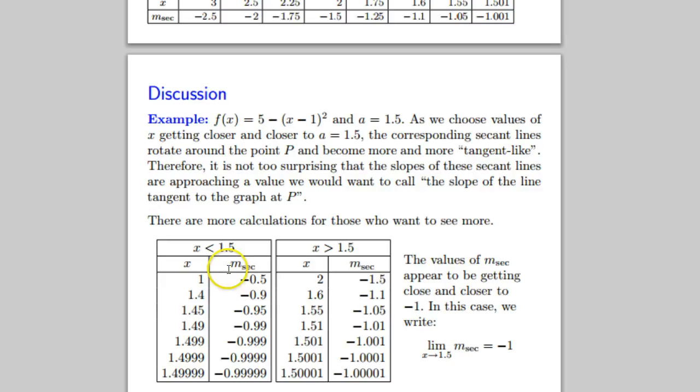Here's some more calculations if you really wanted to see. The value of m secant, the slope of the secant, appears to be getting closer and closer to negative 1. In this case, we would write the limit as x approaches 1.5 of the slope is going to be negative 1.